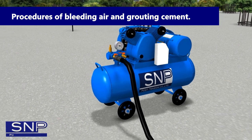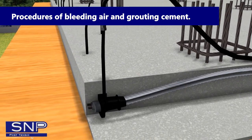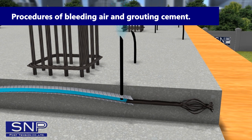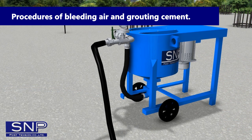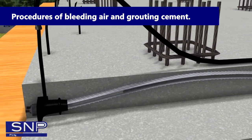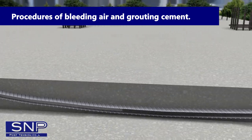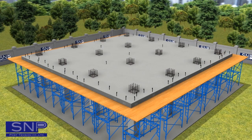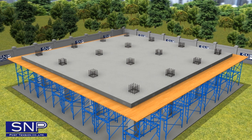Procedures of Bleeding Air and Grouting Cement: 1. Aerate every sheath to check for obstacles before grouting cement. 2. Grout cement by testing in accordance with the shop drawing. 3. When the sheath is filled with cement, fold the PE and use wire to tie it tightly. 4. Grout cement in every sheath and check according to the shop drawing. 5. After cement and sheath harden, cut the PE. Procedures of grouting cement are complete.